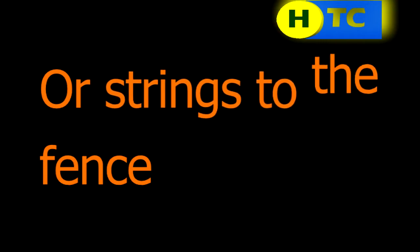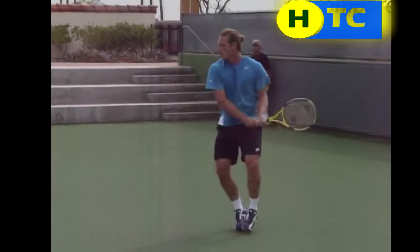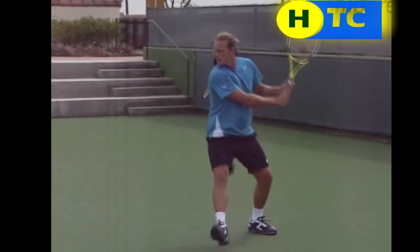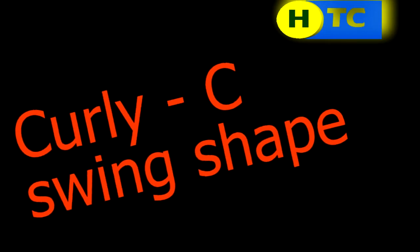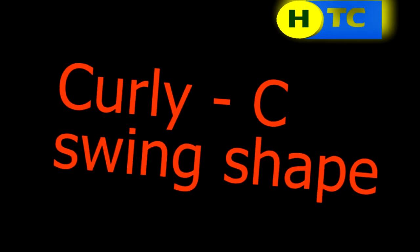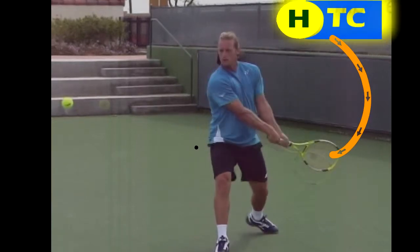His next movement is to turn his shoulders and put the penny on the edge — or show the strings to the fence. Then we're going to see him drop his racket down with that curly cut swing shape, getting the racket head down below the height of the ball.